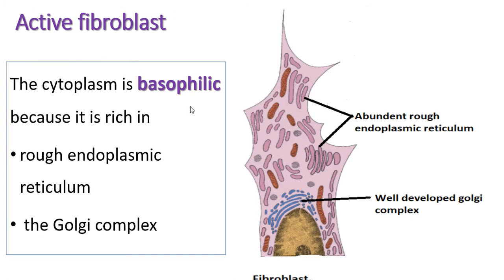The cytoplasm of the active fibroblast is basophilic because it contains protein-producing organelles. These protein-producing organelles are the rough endoplasmic reticulum and Golgi complex, so these two organelles are more abundant in the active fibroblast.